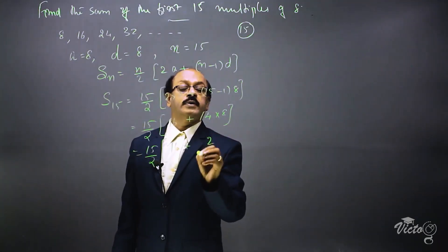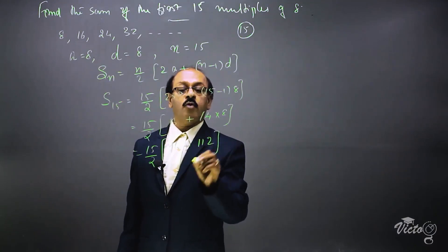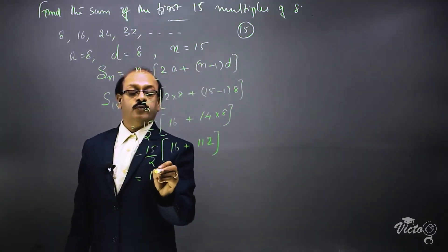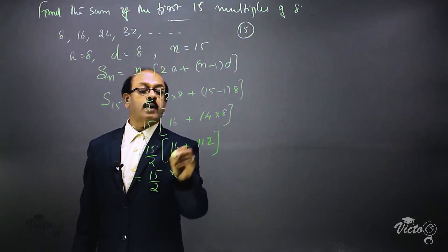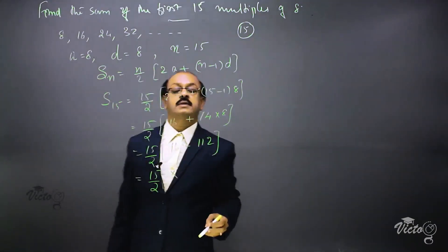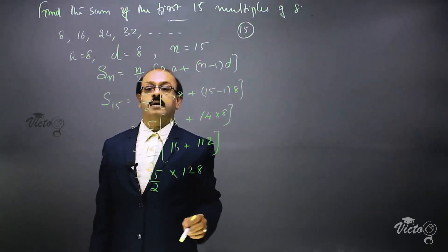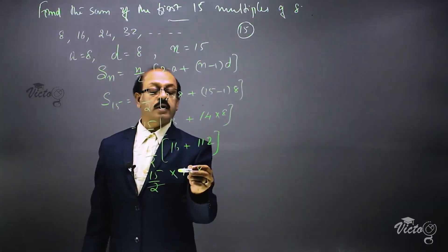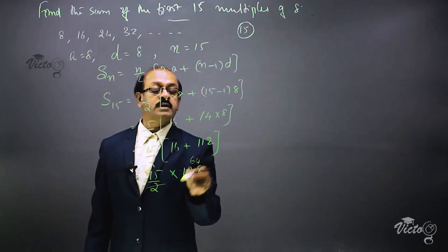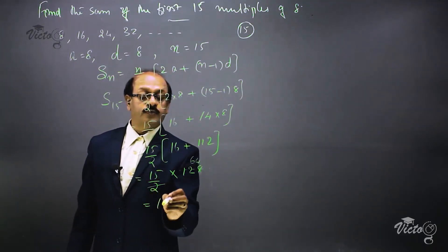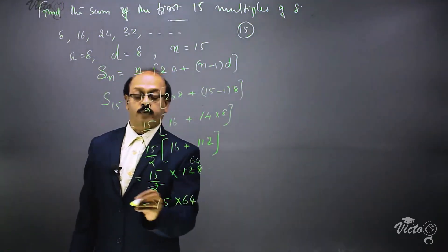Now 15 by 2 into, adding 112 and 16, it is 128. Now we can cancel 2 and 128. 2 and 128 get canceled, it is 64. Now 15 into 64.